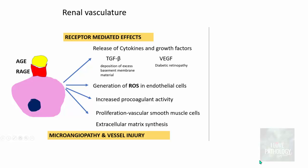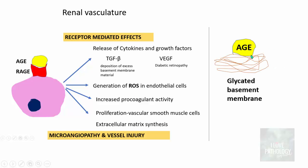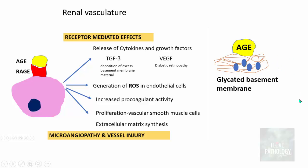In the renal vasculature, the same receptor-mediated and non-receptor-mediated mechanisms apply, ultimately resulting in microangiopathy — deposition of basement membrane and vascular smooth muscle proliferation with endothelial damage. Additionally, the glycated basement membrane (type 4 collagen) can trap albumin. When albumin cross-links with the glycated membrane, it results in further basement membrane thickening. So basement membrane thickening occurs both via TGF-beta (receptor-mediated) and via albumin accumulation on the glycated basement membrane.